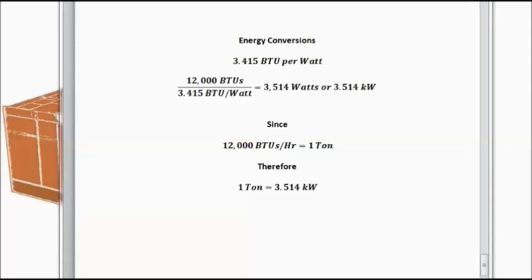as there's 12,000 BTUs in a ton, and divide that by 3.415, we get 3,514 watts, or 3.514 kilowatts. And again, since 12,000 BTUs per hour is equivalent to 1 ton of refrigeration, we can say that 1 ton is the equivalent of 3.514 kilowatts.